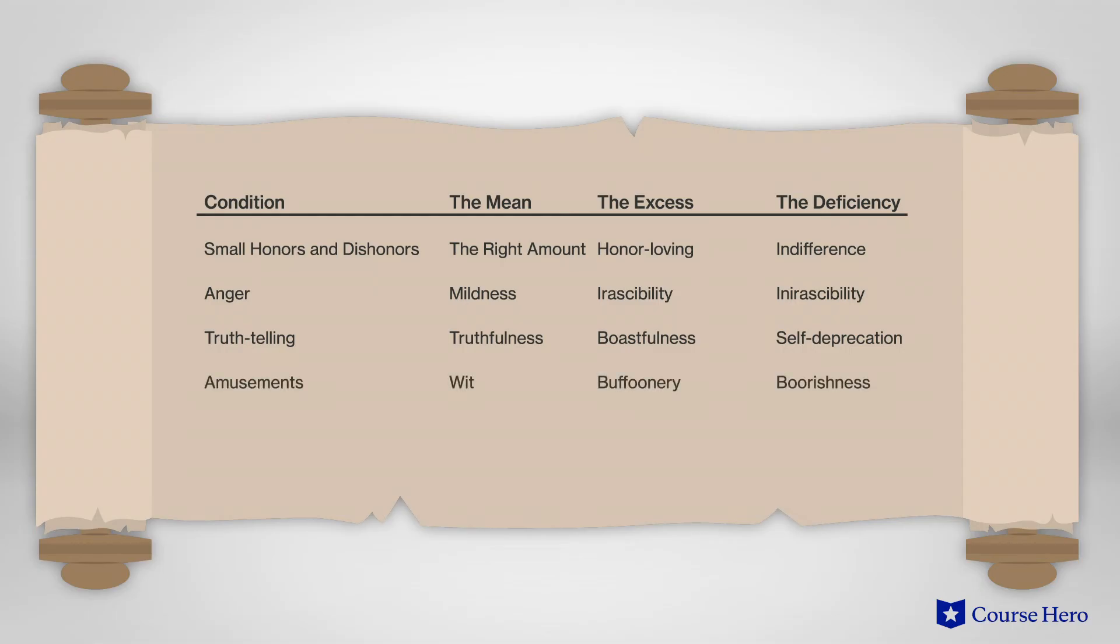In amusements, the mean is wit, the excess is buffoonery, and the deficiency is the state of boorishness.